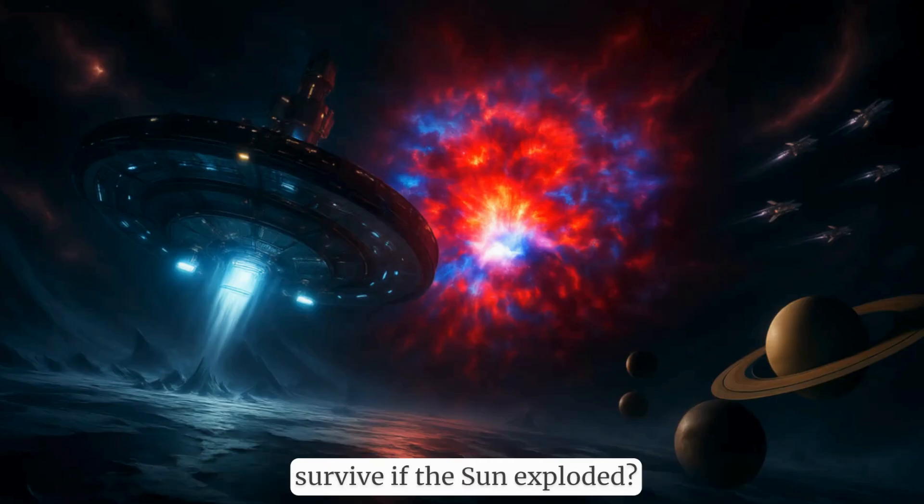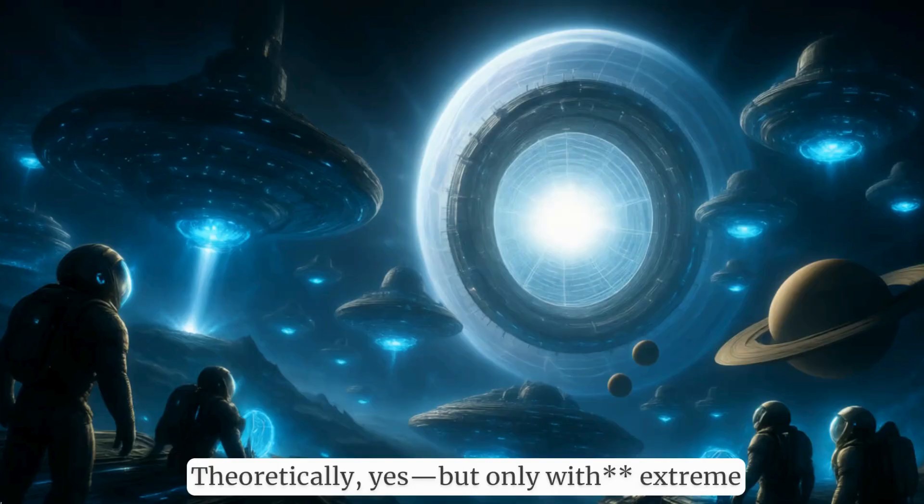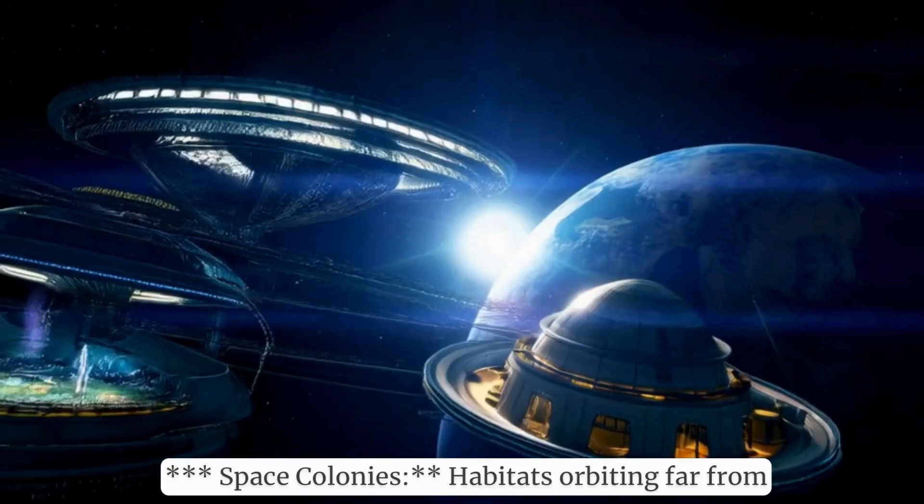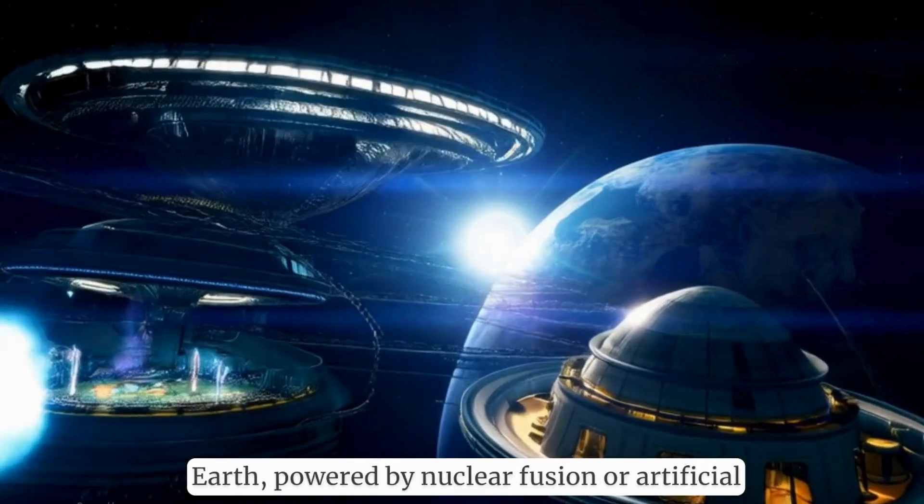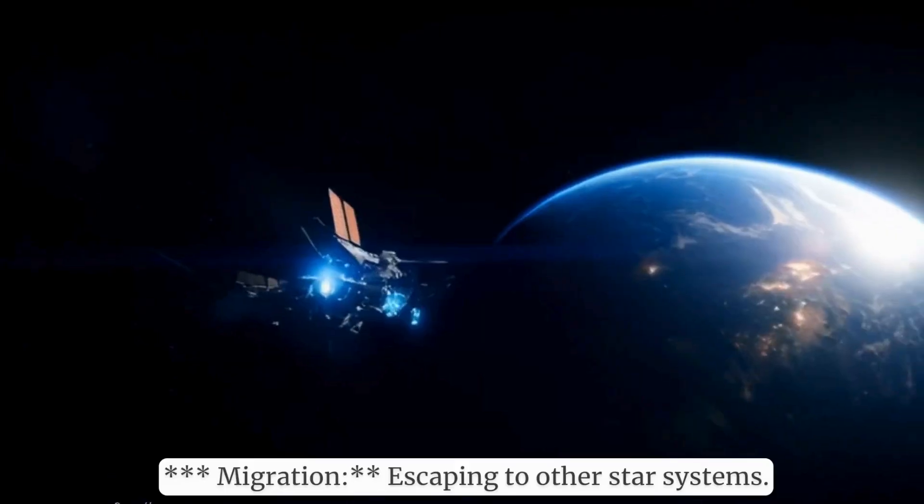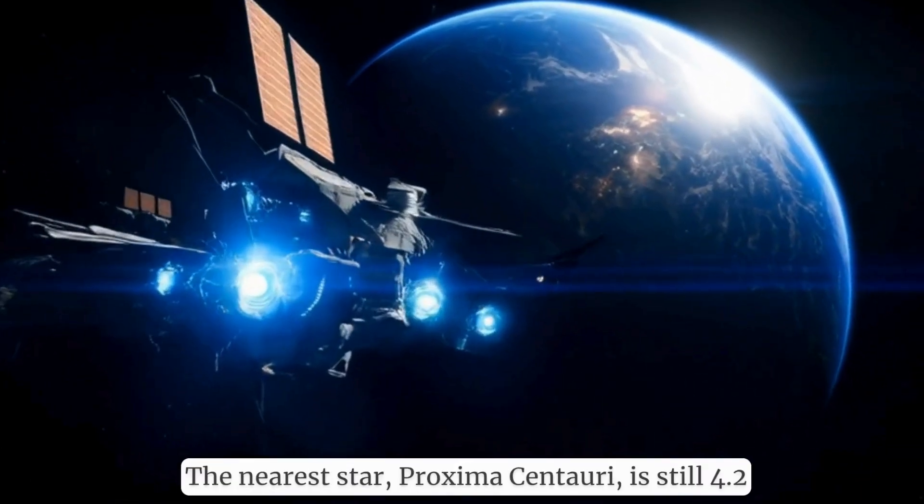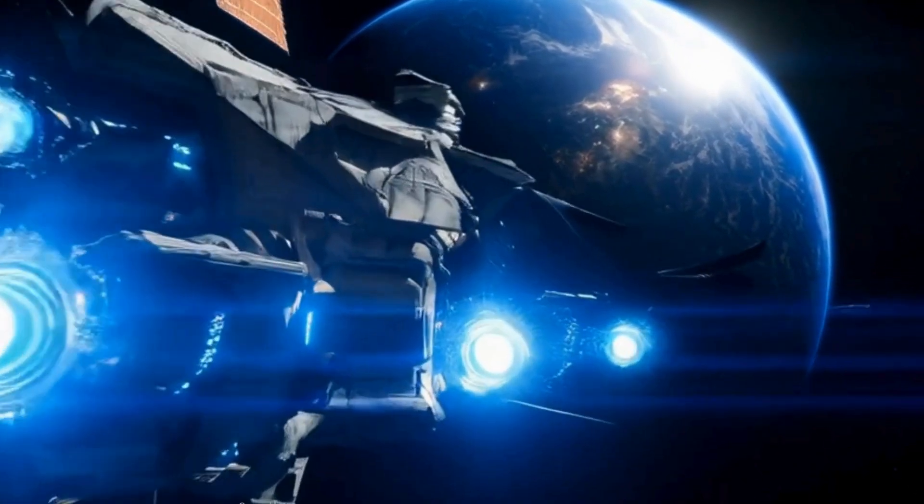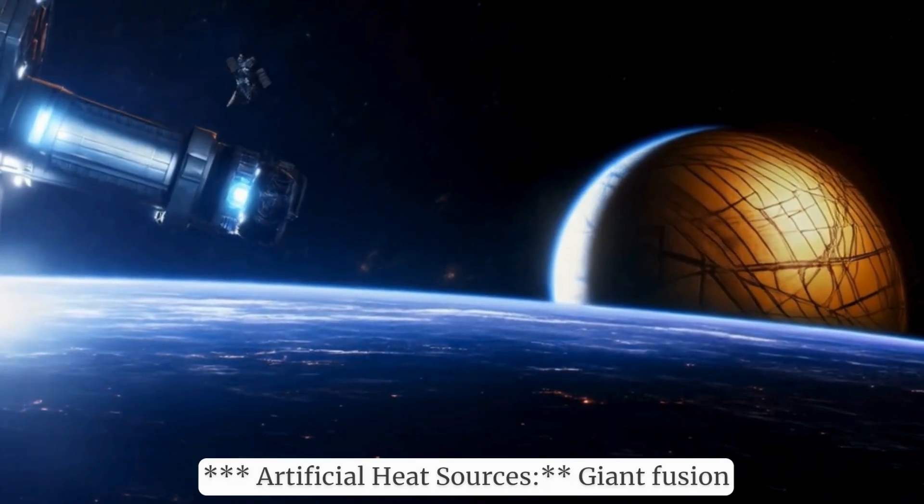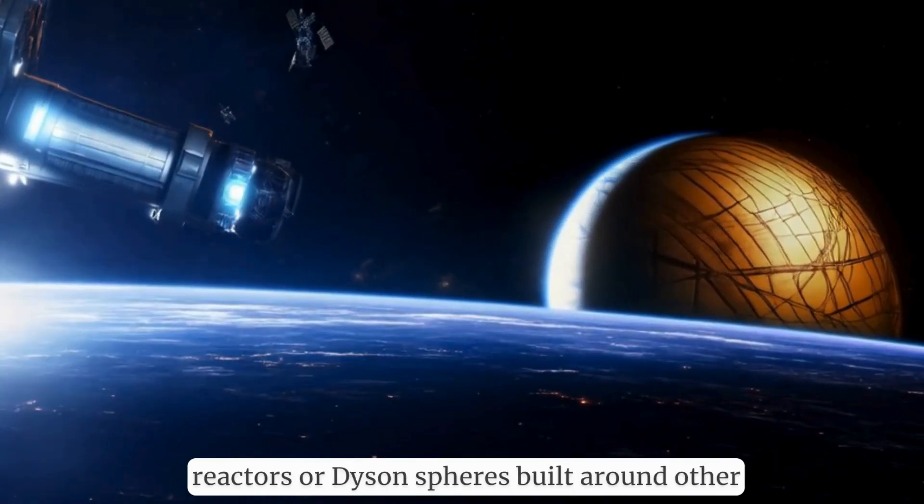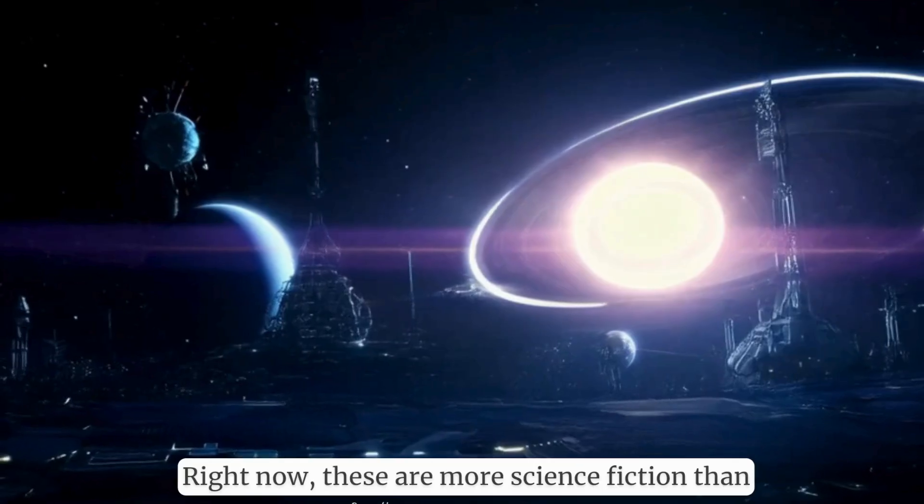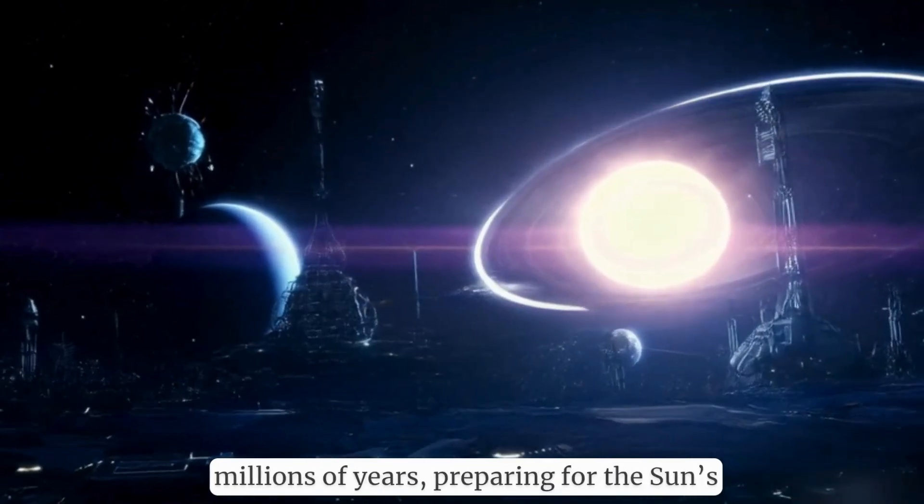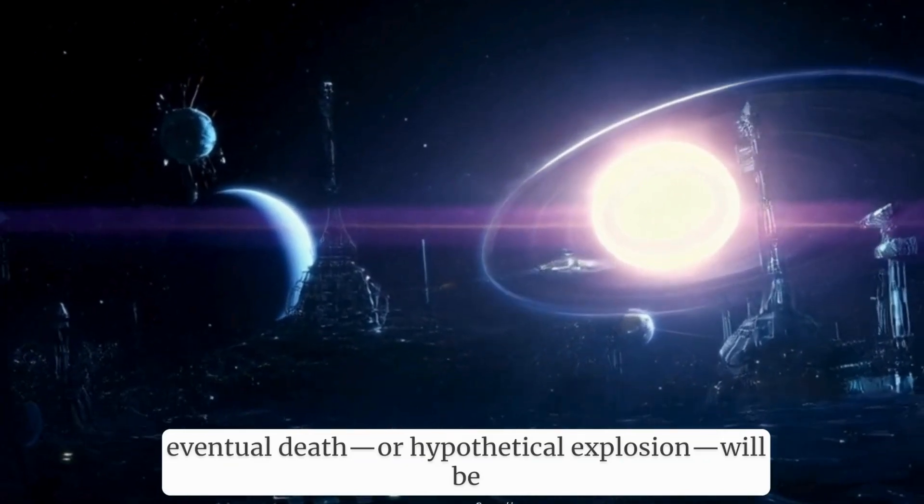Now here's a fascinating thought: could humanity survive if the Sun exploded? Theoretically, yes, but only with extreme technological advancement. Possible strategies: space colonies, habitats orbiting far from Earth powered by nuclear fusion or artificial suns; migration, escaping to other star systems. The nearest star, Proxima Centauri, is still 4.2 light-years away, requiring technology far beyond what we have today. Artificial heat sources: giant fusion reactors or Dyson spheres built around other stars to harness energy. Right now, these are more science fiction than science fact. But if humanity survives for millions of years, preparing for the Sun's eventual death or hypothetical explosion will be critical.